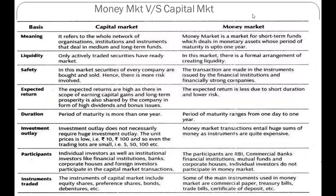Now, comparing the money market and capital market: in terms of meaning, the capital market refers to a network of organizations and institutions dealing in medium and long-term funds, while the money market deals with short-term funds with a maturity period of up to one year. In terms of liquidity, the money market has a formal arrangement for creating liquidity. In terms of safety, in the capital market securities of every company are bought and sold through brokers, so there is more risk involved.